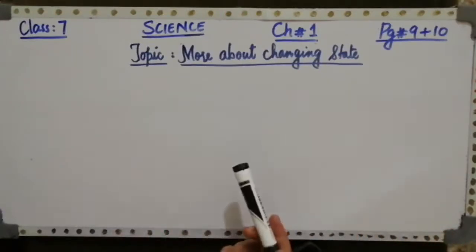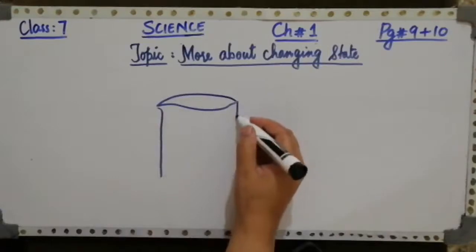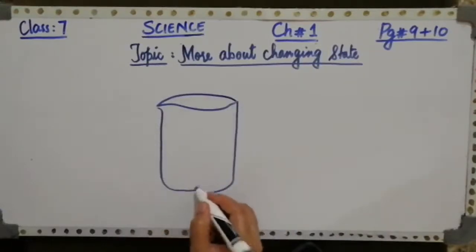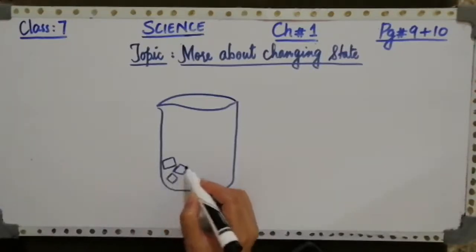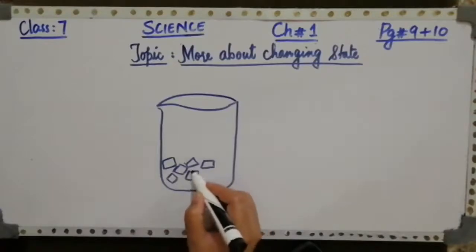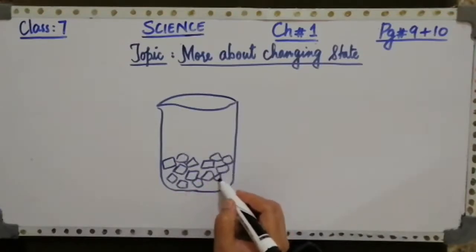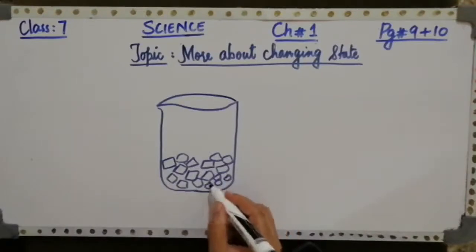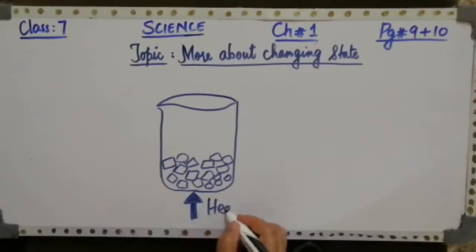Let us see what happens when some crushed ice is heated. You have to take a beaker, and inside the beaker you will take some ice cubes which are crushed. Take some ice cubes — I am taking a few of them to show this activity to you. Now the ice cubes are gently heated. I am providing heat from the bottom of the container.